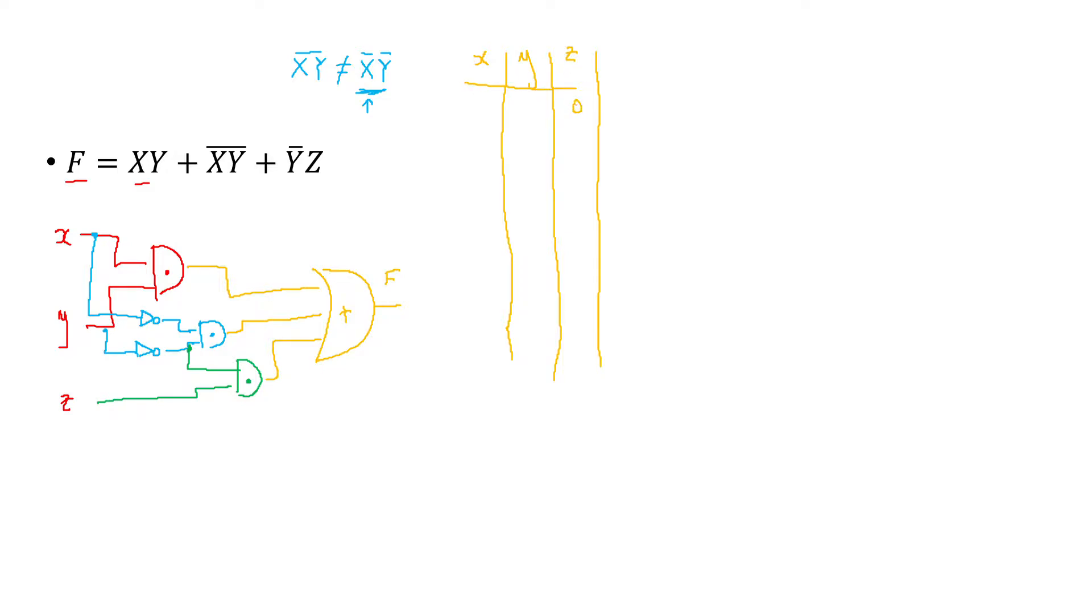We were saying that these guys work with 0, 1, 0, 1, 0, 1, and 0, 1, 0, 1. Y is gonna be 0, 0, 1, 1 and 0, 0, 1, 1. X's are gonna be in groups of four, so this would be 0, 1, 2, 3, 4, and then 1, 2, 3, 4.